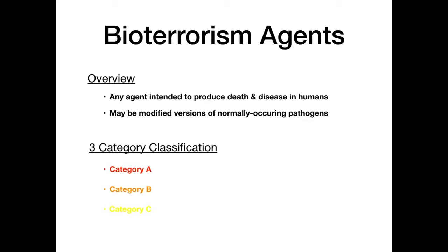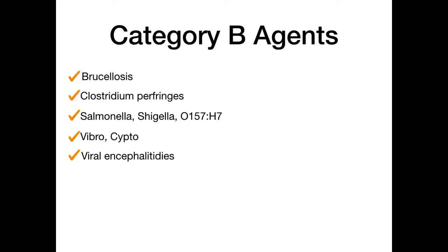Category B agents are intermediate — still dangerous but not quite as lethal as category A. Agents you should already know from review sources include brucellosis, Clostridium perfringens, Salmonella, Shigella, E. coli O157:H7, water-borne pathogens such as Vibrio and Cryptosporidium, and the viral encephalitides. Those are covered in First Aid and other review sources, so we won't discuss them here.